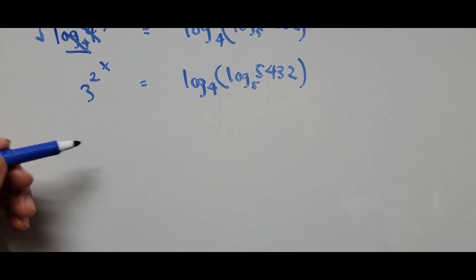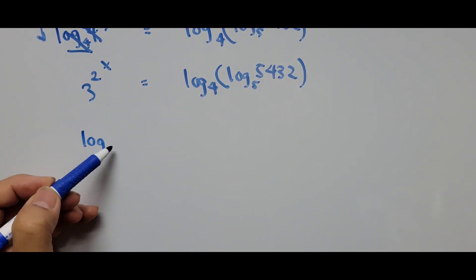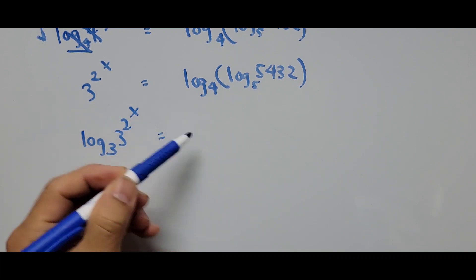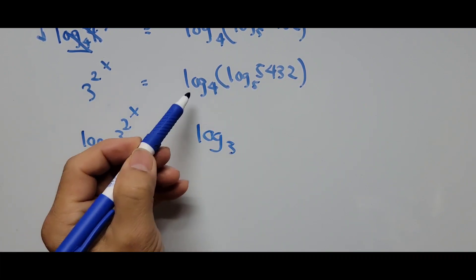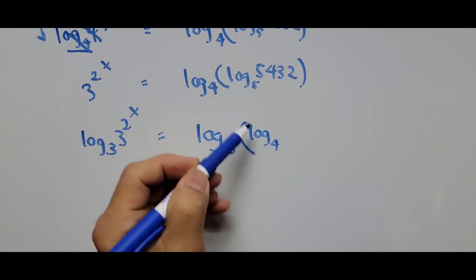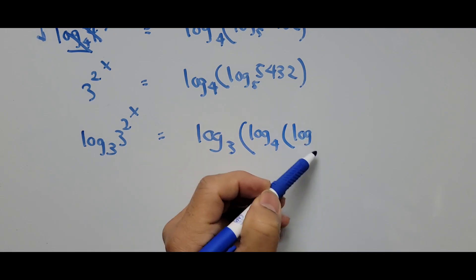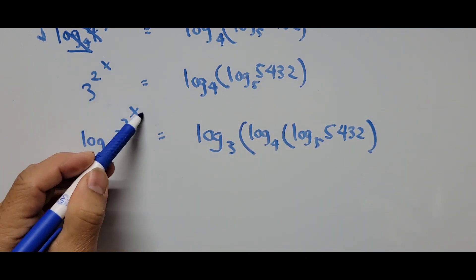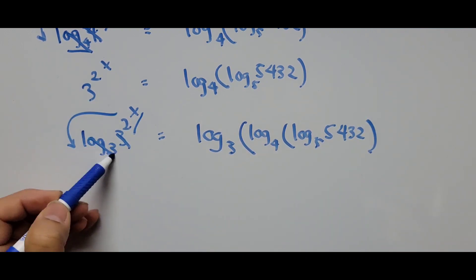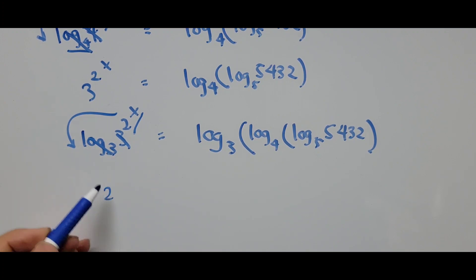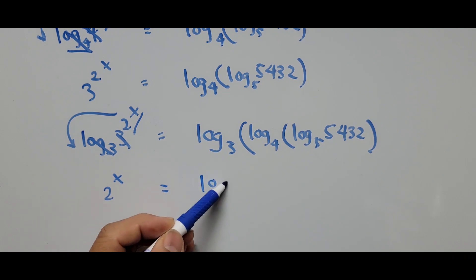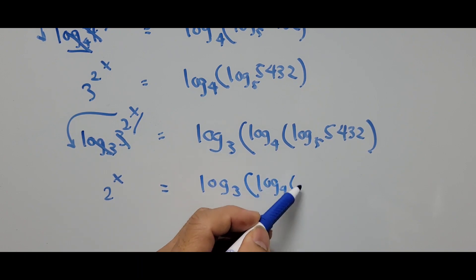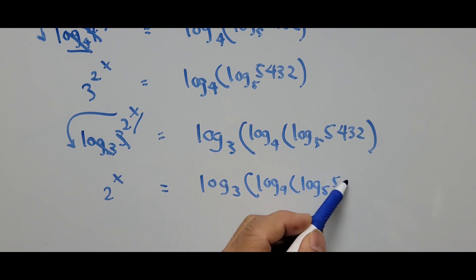We take log base 3 of both sides: log base 3 of 3^(2^x) equals log base 3 of (log base 4 of (log base 5 of 5,432)). The exponent comes down and becomes a coefficient; this equals 1, so we now have 2^x = log base 3 of (log base 4 of (log base 5 of 5,432)).